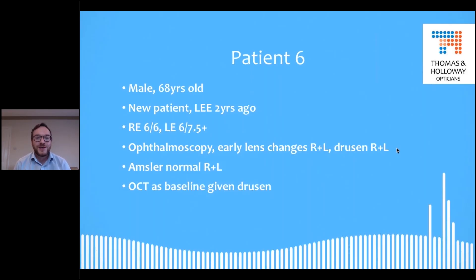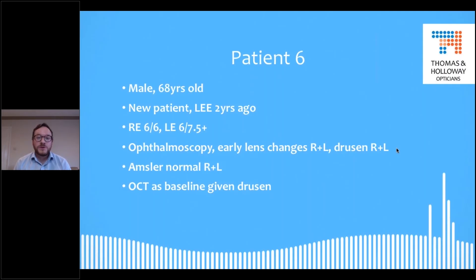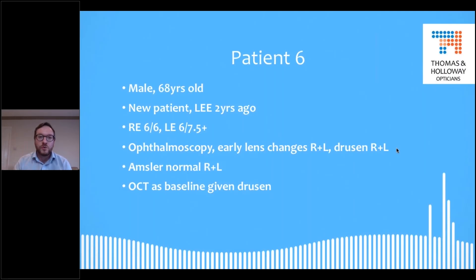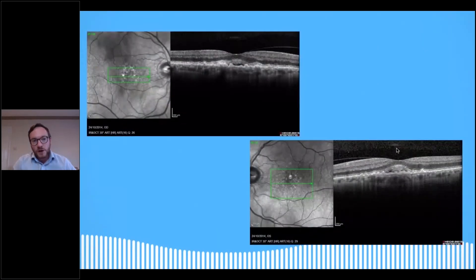Moving on to patient six: male, 68 years old. This was a new patient when he first saw me back in 2014 — he's now a diehard loyal patient. His last eye exam previous to this had been two years prior. Visions are pretty good: 6/6 right, 6/7.5 plus left. Ophthalmoscopy showed early lens changes, some sort of macular mottling, pigmentary change — that kind of non-specific appearance you get when you think it's going to be dry macular change. Amsler: he reported no distortion, no metamorphopsia. Given it was the first time I'd seen him and we had the technology available, I discussed the advantages of OCT and we thought we were just going to be taking a baseline image.